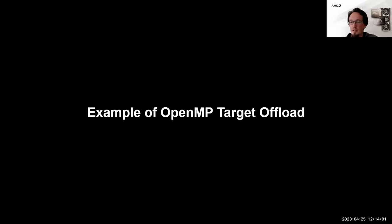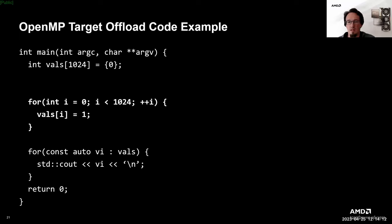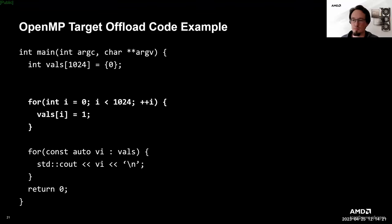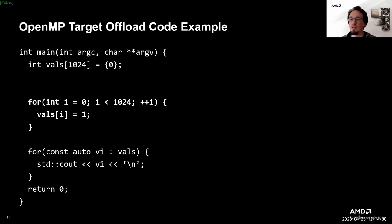With all those things said, let's look at a simple OpenMP example program and what it would look like when executing on an AMD GPU after being compiled with AOMP. We start with a C++ application with no OpenMP annotations: it creates a stack array, initializes its entries with zero, loops over the array assigning each entry the value one, prints the values in order, and finally returns zero.